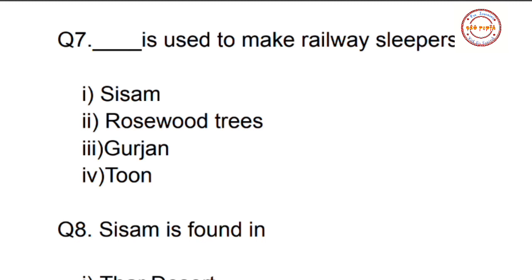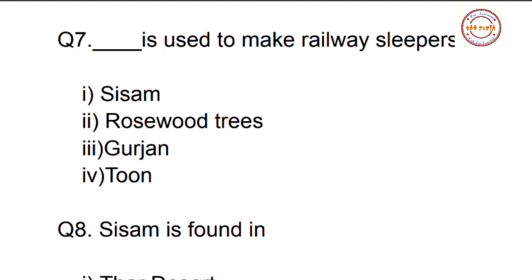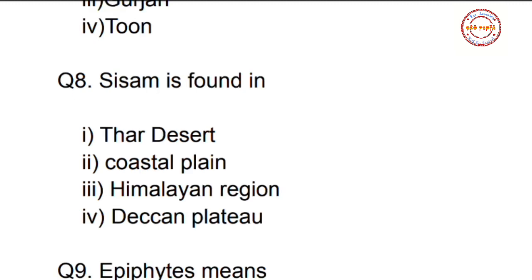Please subscribe to our channel and press the bell icon to get all videos on time. Question number seven: Which plant is used to make railway sleepers? Options are: sisham, rosewood, gurjan, or tun. This is an interactive question — please comment the correct answer in the comment section below.